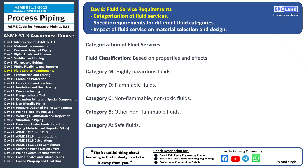Welcome back to our 30-day beginner course on ASME B31.3. Today we're delving into categorization of fluid services. Fluid services are categorized based on their properties and potential effects on the piping system. Different fluids are classified into categories to help design and operate piping systems safely. Category M includes highly hazardous fluids that can cause major harm or damage — extra precautions are taken when handling and transporting these fluids.